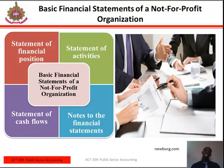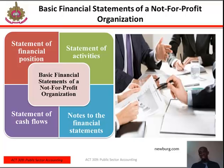The second statement is the statement of activities, which presents the increases and decreases in a not-for-profit organization's net assets over a period of time. For fiscal year financial statements, it covers the entire fiscal year. A non-accountant might understand this statement better if it were termed the operating statement or the income statement.